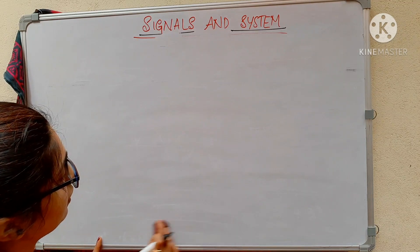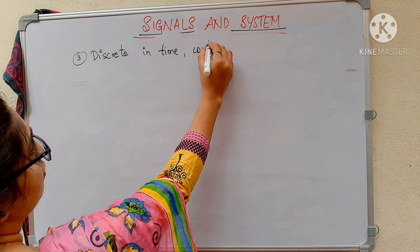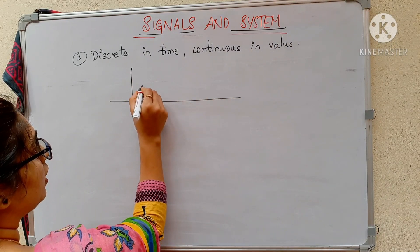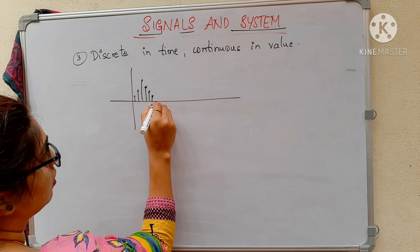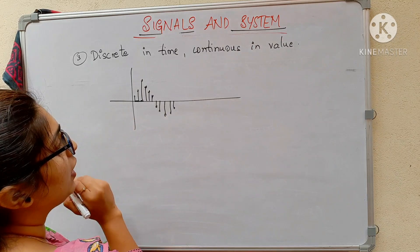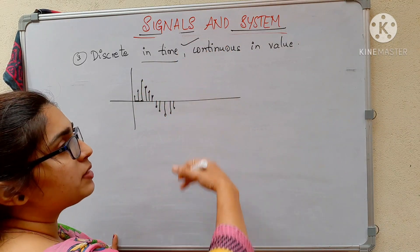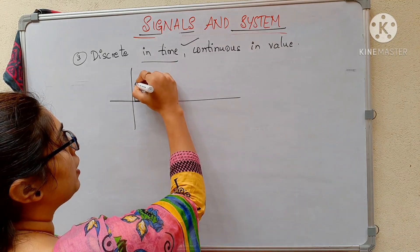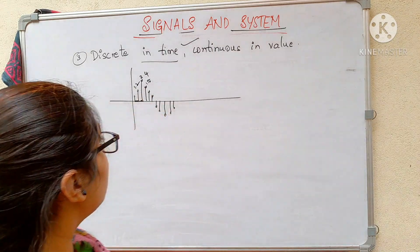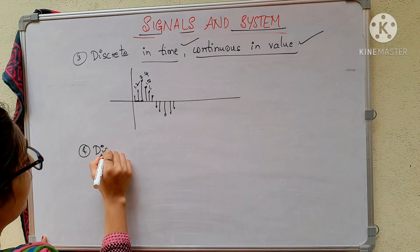Third type: discrete in time but continuous in value. When I sample a continuous signal, I get values only at specific instants — in between I have no value, so it is discrete in time. But the sampled values can be any real number like 2.4, 1.2, or 1.5, so it is continuous in value. Fourth type: discrete in time and discrete in value.